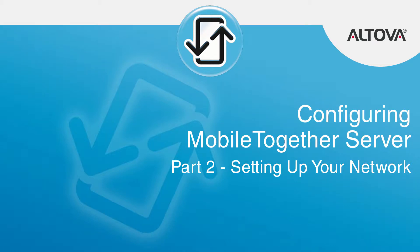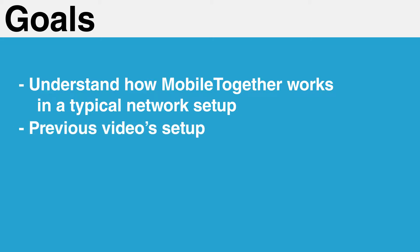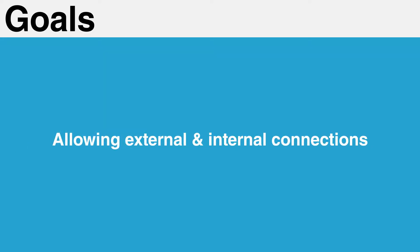Configuring your network to work with MobileTogether is a very straightforward process. This tutorial will provide you with the information required to have a firm understanding of how MobileTogether operates in a typical network setup. It will cover both the network setup from the previous video as well as the final network setup, one that will allow MobileTogether clients outside your corporate firewall to connect to services inside your firewall.